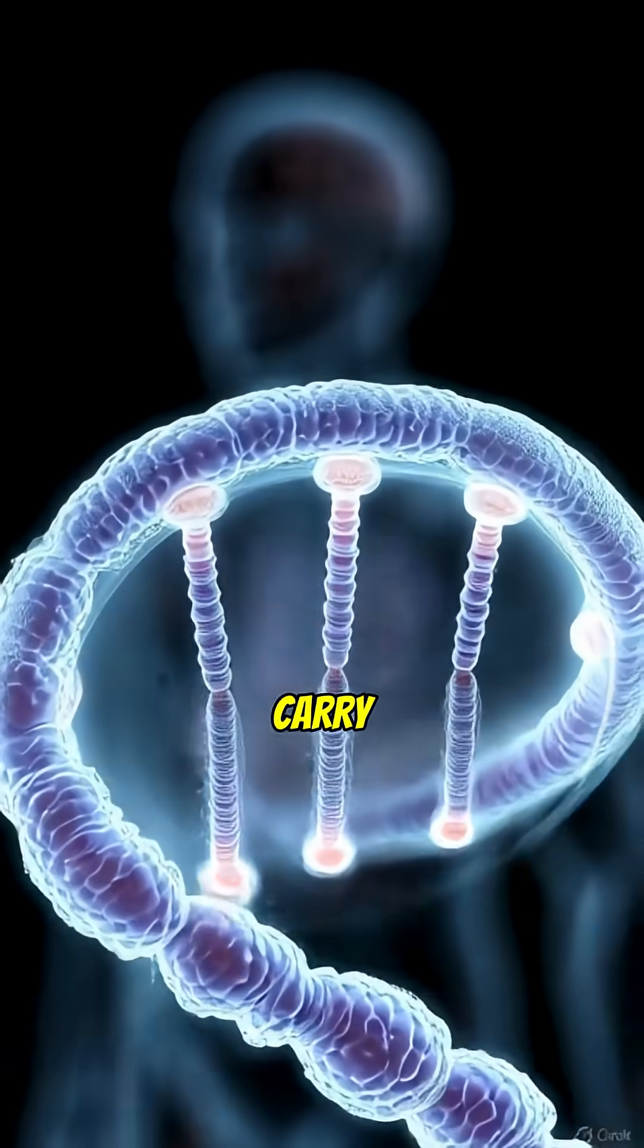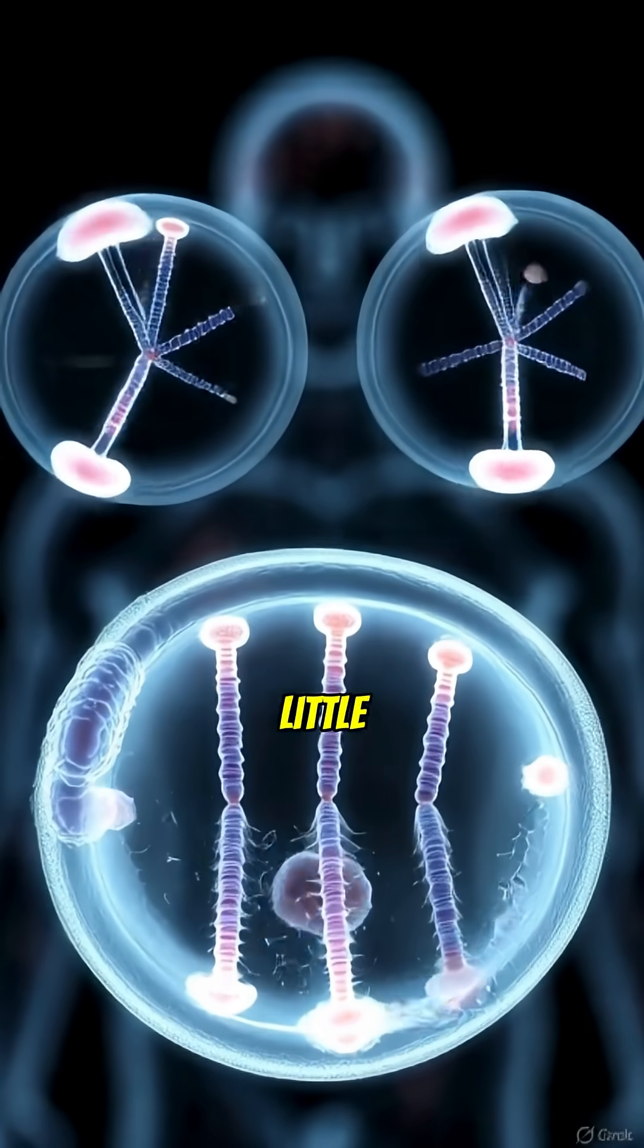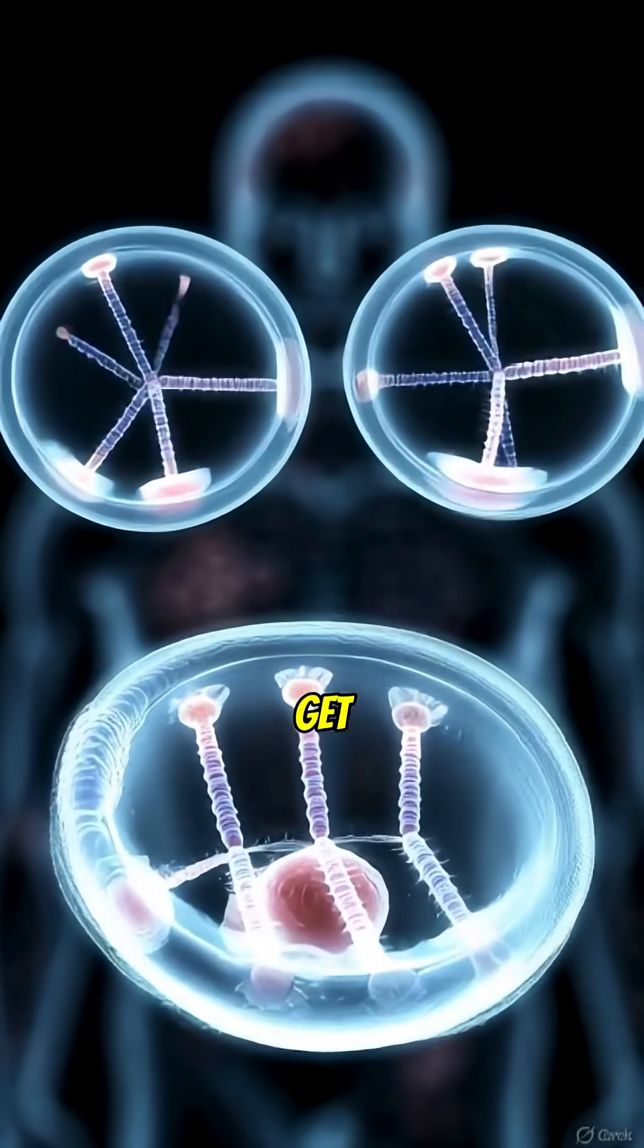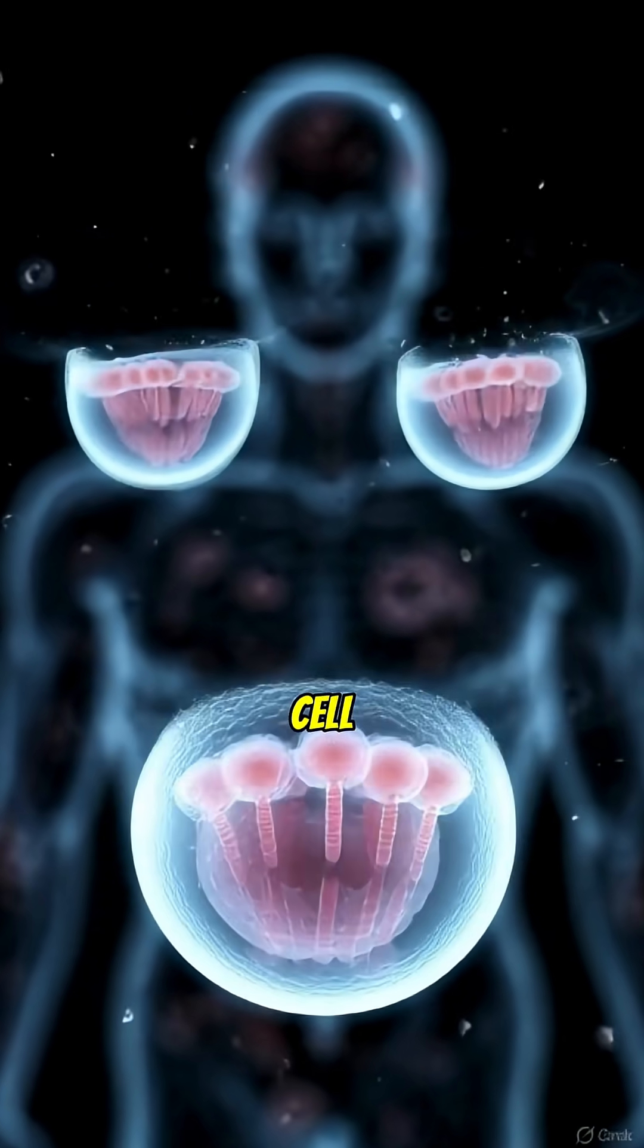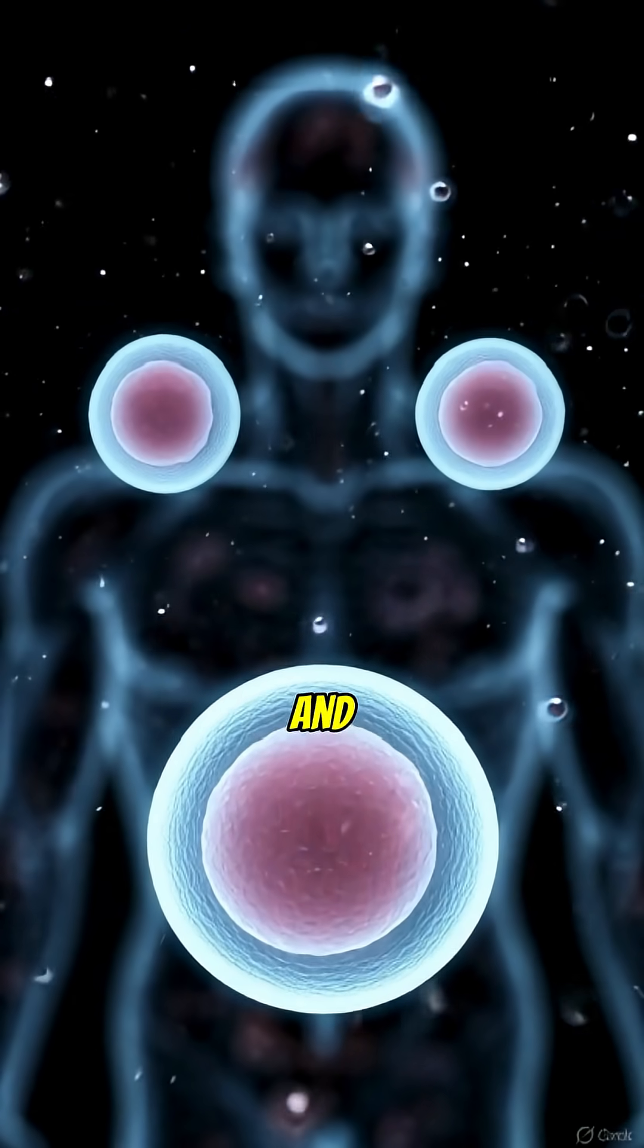Your cells carry a clock, telomeres, little caps on DNA that get shorter every time a cell divides. When they're used up, the cell stops renewing itself and ages.